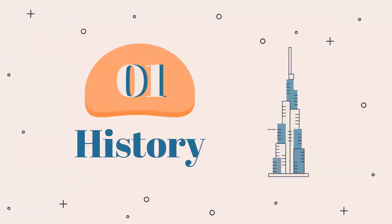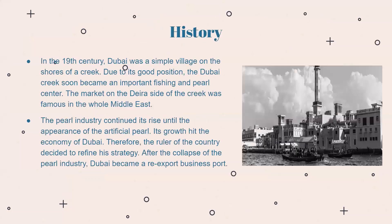First is its history. In the 19th century, Dubai was a simple village on the shores of a creek. Due to its good position, the Dubai Creek soon became an important fishing and pearl center. The market on the Deira side of the creek was famous throughout the whole Middle East. The pearl industry continued to rise until the appearance of the artificial pearl, which hit the economy of Dubai.